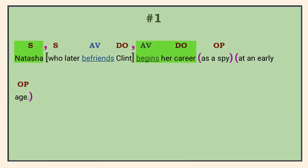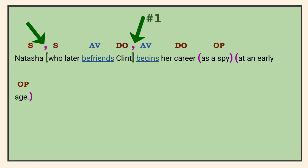Number 1. Natasha is the subject of the action verb BEGINS because WHO is the subject of BEFRIENDS in the relative clause. 'Who later befriends Clint' provides extra information about Natasha, so it is non-restrictive and needs commas on both sides. 'As a spy' tells WHICH career, so it's an adjectival prep phrase, while 'at an early age' tells WHEN she begins it, so it is adverbial.